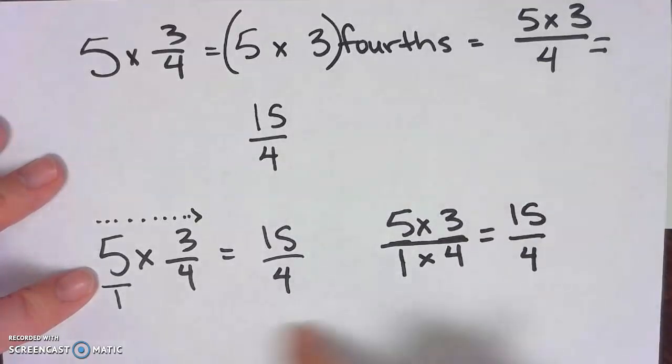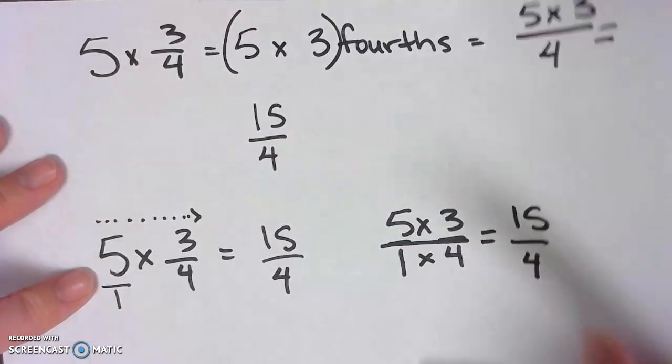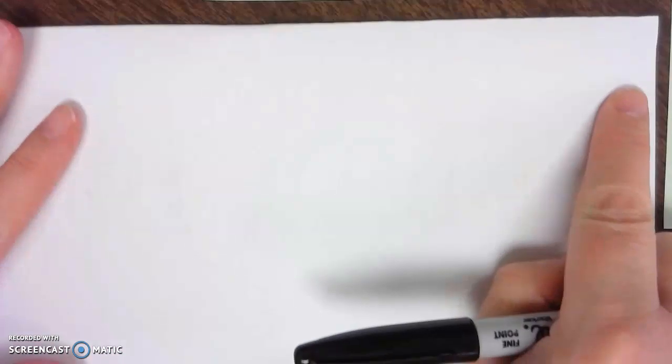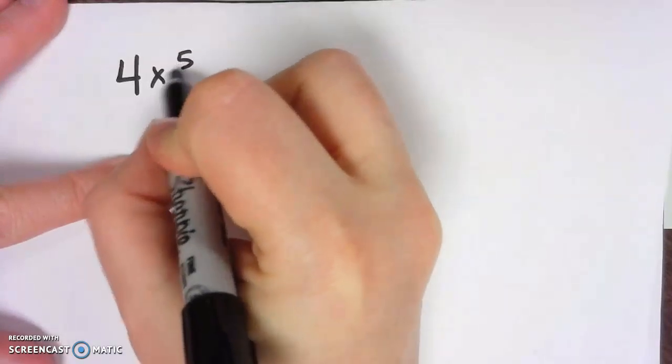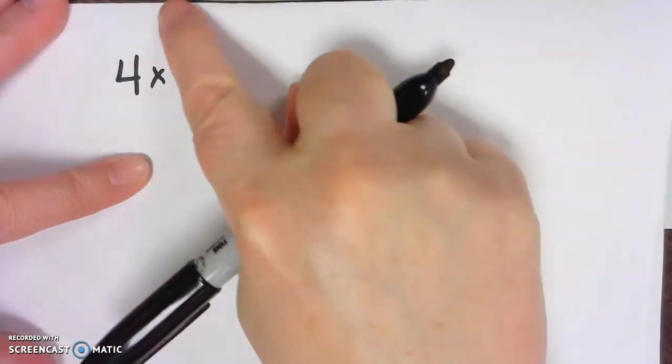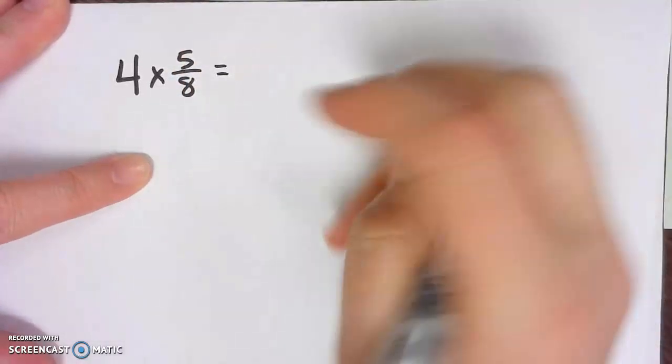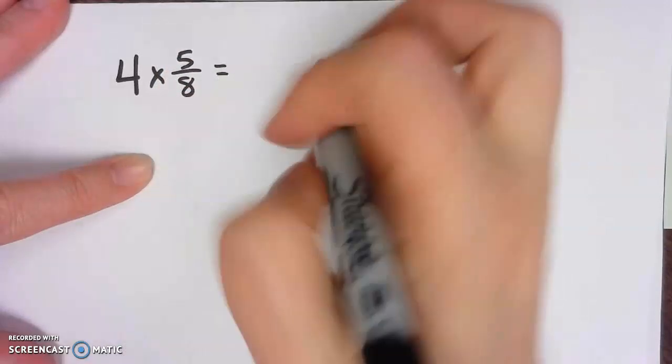Let's do another one. So Zearn doesn't have you do any more problems after this on your own, so I'm just going to give you some extra ones that we can keep practicing with. Let's do 4 times 5/8. The first thing I'm going to do is write that in unit form.